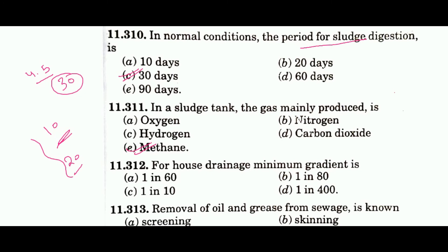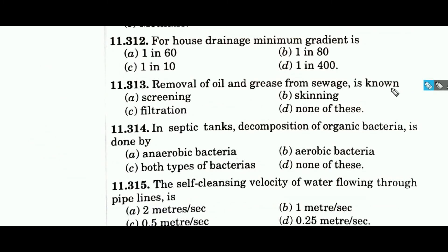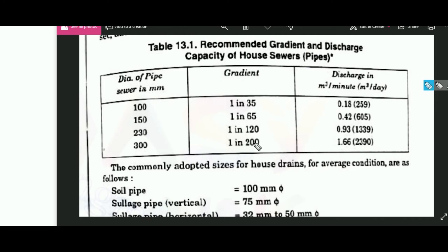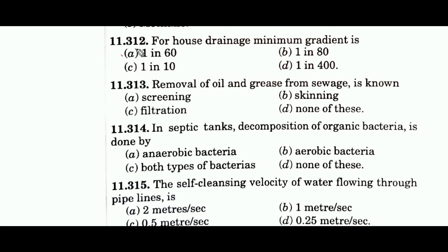Question 312 asks about the minimum gradient for house drainage. It depends on the diameter. If the diameter is 100 mm, the gradient is 1 in 35. If the diameter is 300 mm, it is 1 in 200. Since no diameter is specified in the question, based on the given options, the answer is 1 in 60, which is option A.